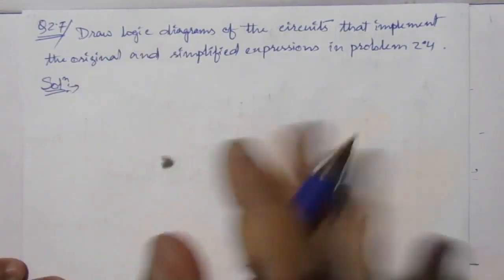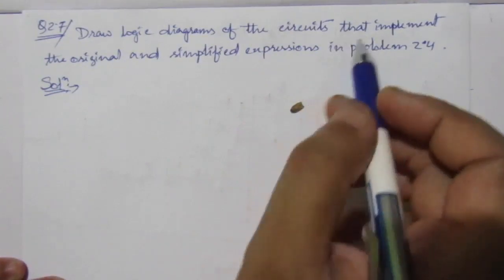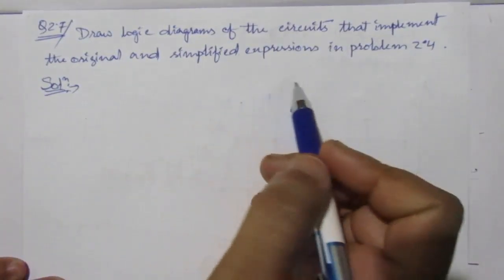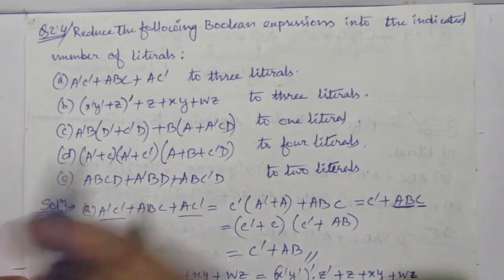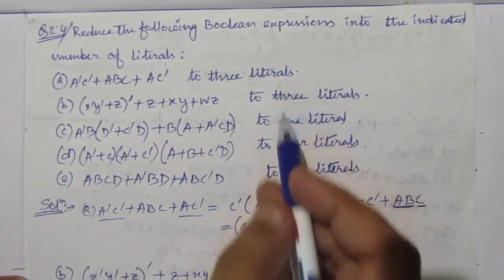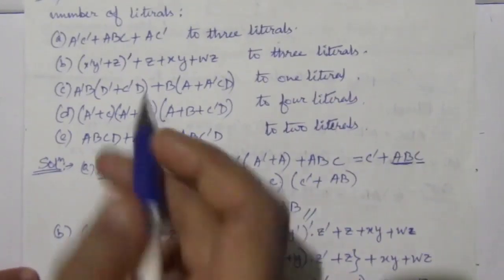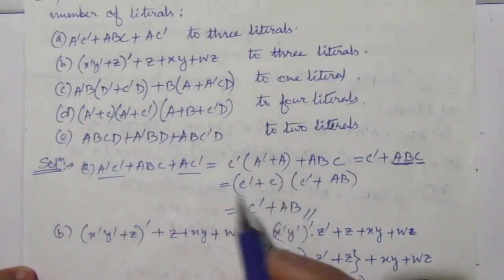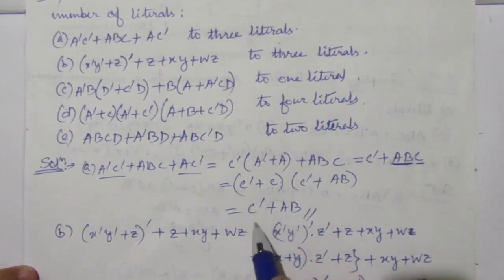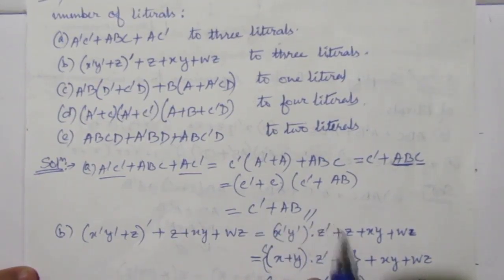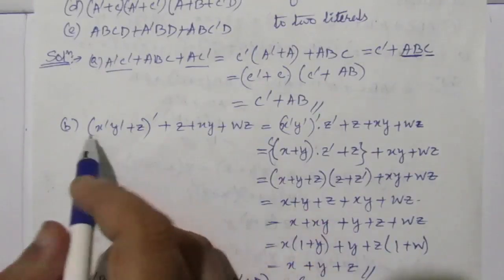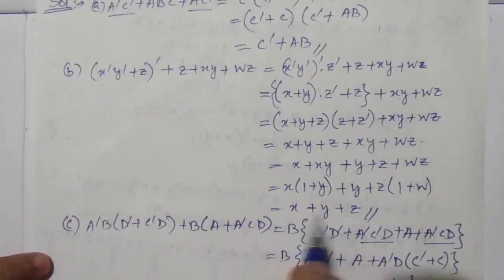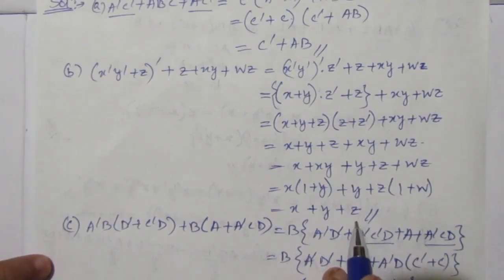The problem is: draw the logic diagrams of the circuits that implement the original and simplified expressions in problem number 2.4. The problem was to reduce the boolean expressions into the indicated number of literals. So we have some original expressions, and after minimization these are the minimized literals. We have to draw the logic diagrams for both the original and simplified expressions.